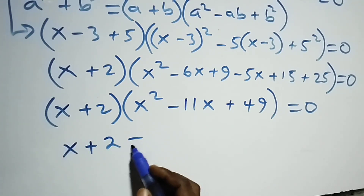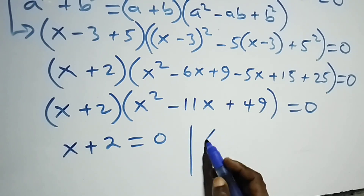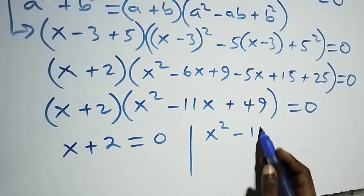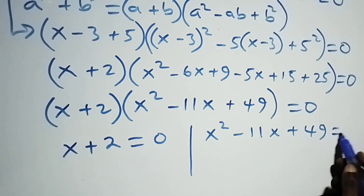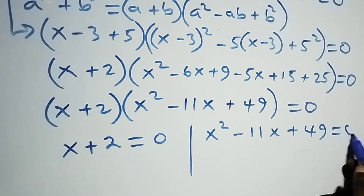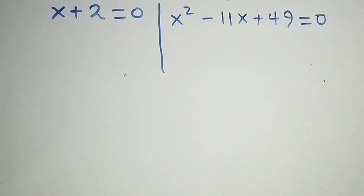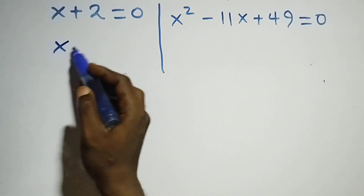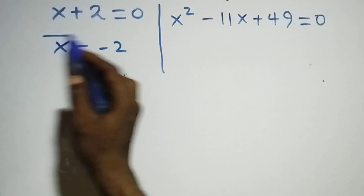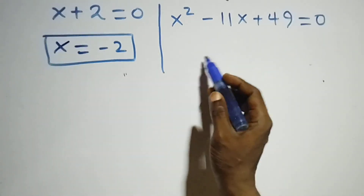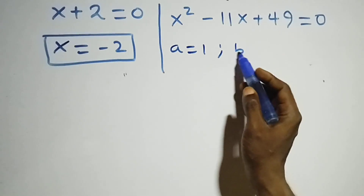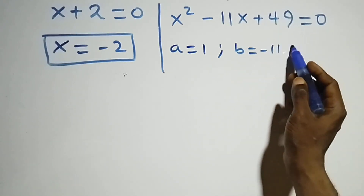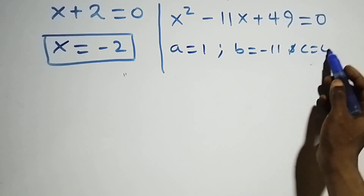Which implies two possible cases: x plus 2 equals 0, or x squared minus 11x plus 49 equals 0. Solving the first gives x equals minus 2, which is a real solution. For the quadratic, a equals 1, b equals minus 11, and c equals 49.